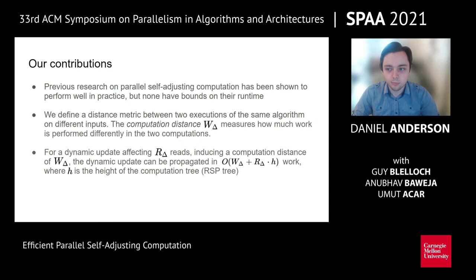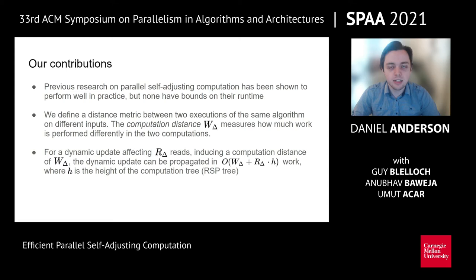Previous work on parallel self-adjusting computation has been mostly experimental, showing good results but without bounds on the runtime of change propagation. In our work, we define a distance metric between two executions of the same algorithm on different inputs, called the computation distance, denoted W_delta, which measures how much work exists in one execution but not the other. We then show that if a dynamic update affects R_delta reads and induces a computation distance of W_delta, change propagation can propagate the update in order W_delta plus R_delta times H work, where H is the height of the RSP tree.